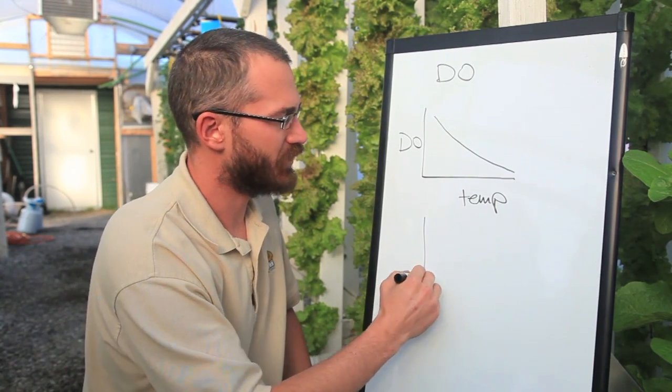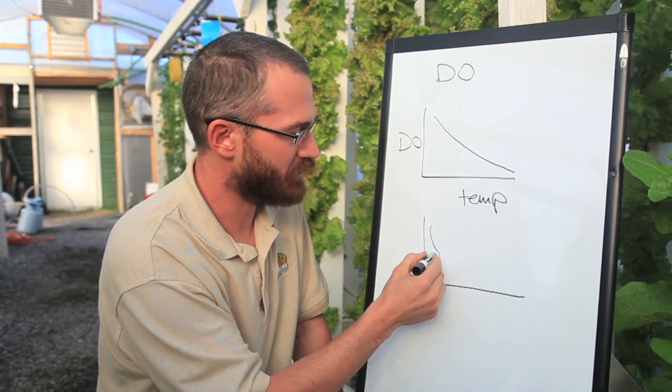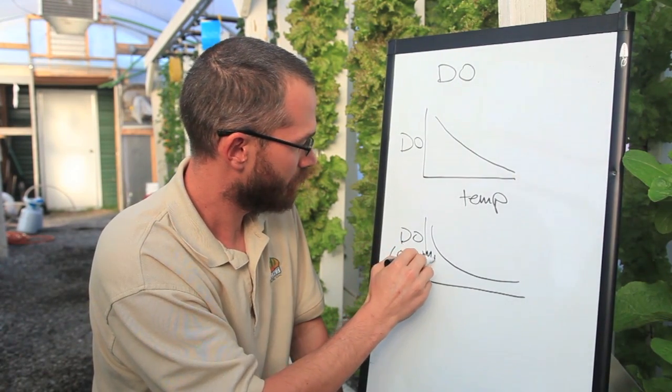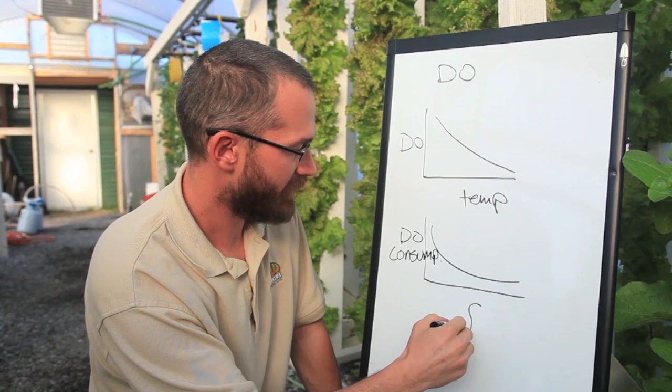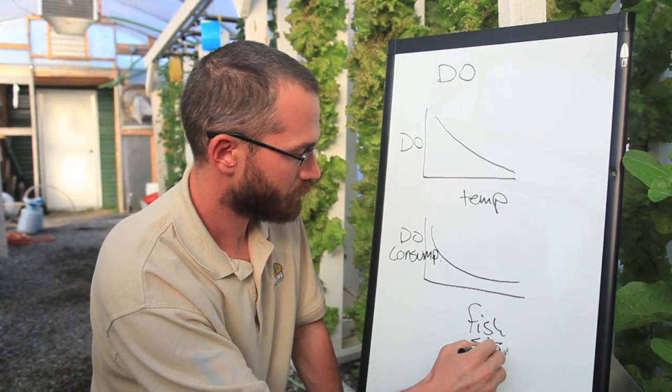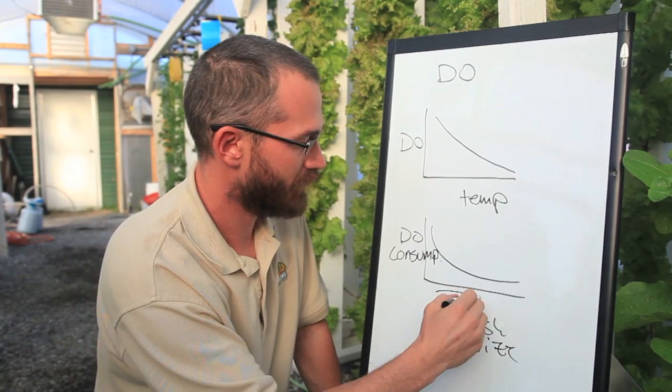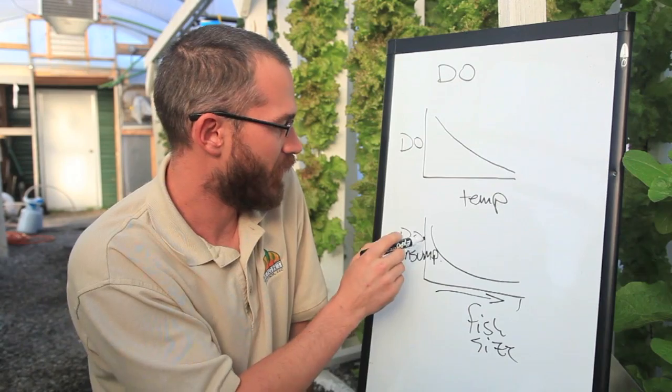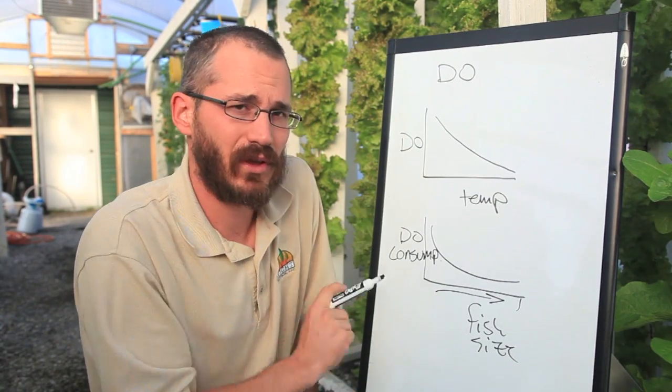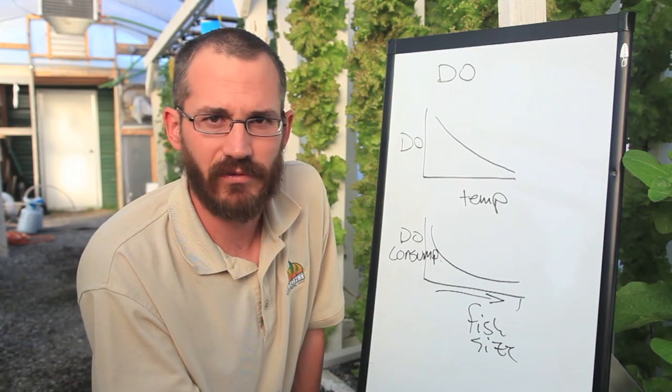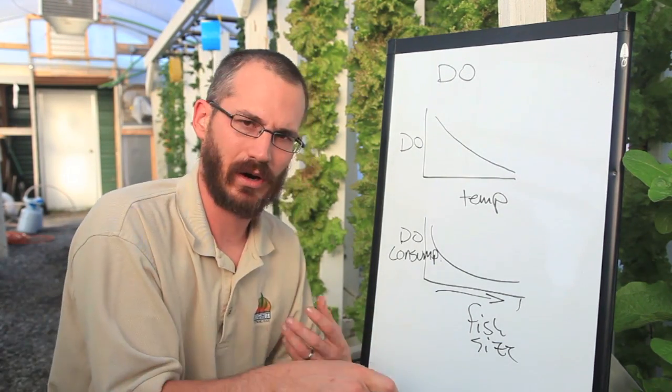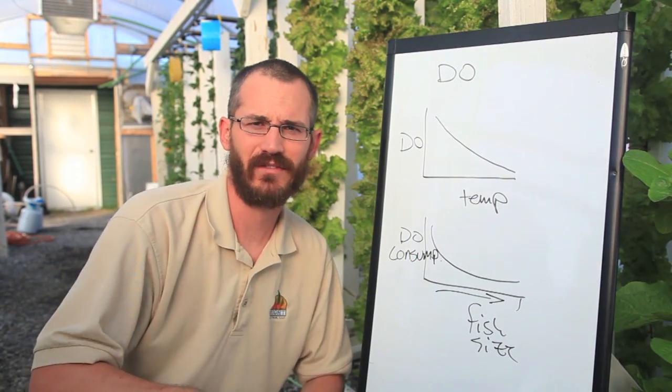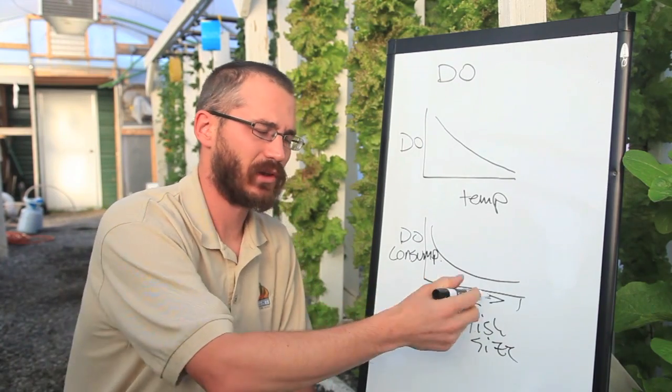Another thing to remember is with your fish size, smaller fish consume much more dissolved oxygen. So if this is DO consumption, and this is your fish size, as those fish get bigger, as they get older, as they get larger, they're consuming less and less dissolved oxygen as a function of weight. This would be like milligrams of dissolved oxygen per kilogram of fish per hour or by some time unit. So our small fish consume very high amounts of oxygen as a function of their body weight. Our larger fish consume less.